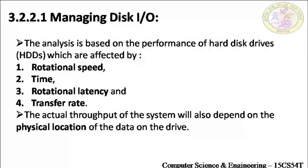The performance of any hard disk depends upon four important factors. The first is rotational speed, measured in RPM — revolutions per minute. Today you have hard disks with rotational speeds of 10,000 RPM and above. Higher the rotational speed, greater is the data transfer rate. The second factor is seek time — the time taken by the read and write head to reach the desired track from its current position.